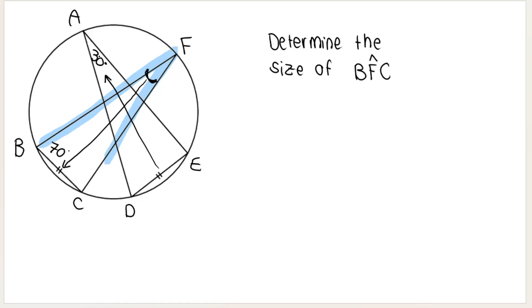30 degrees. So the angle opposite chord DE, that will be the same as the angle opposite chord BC. So B, F, C is also going to equal to 30 degrees.